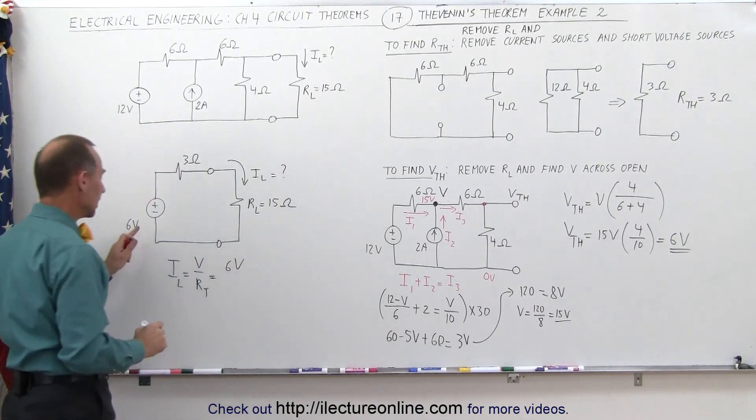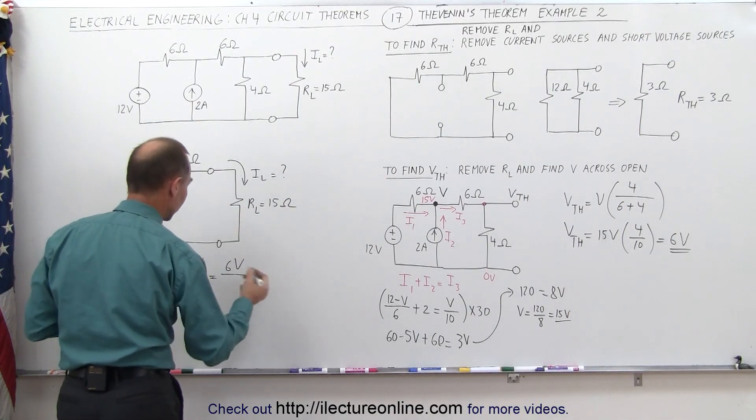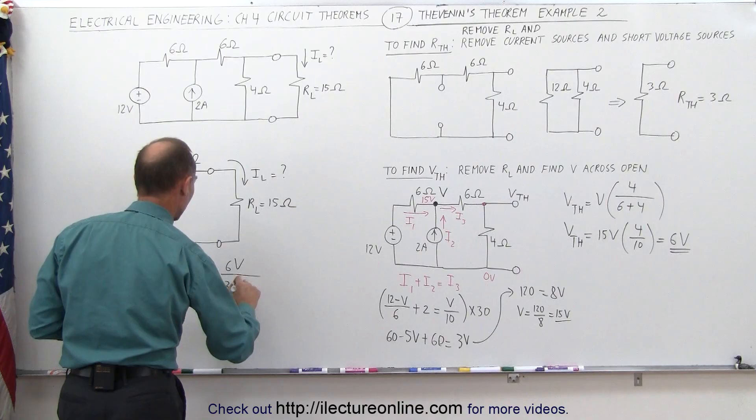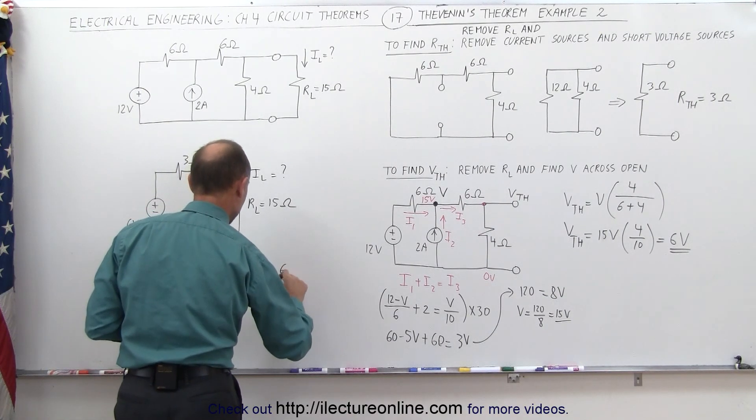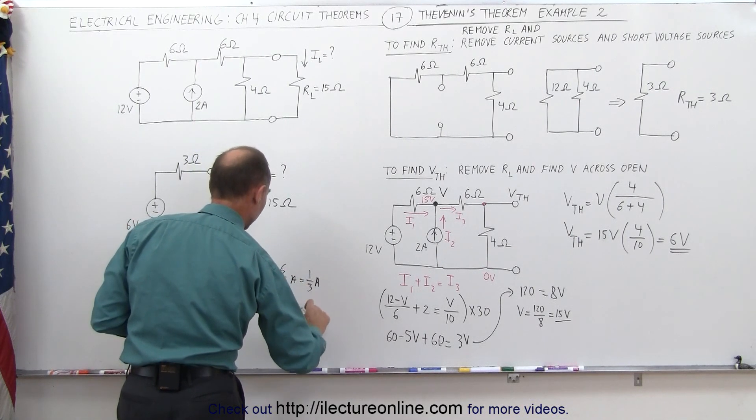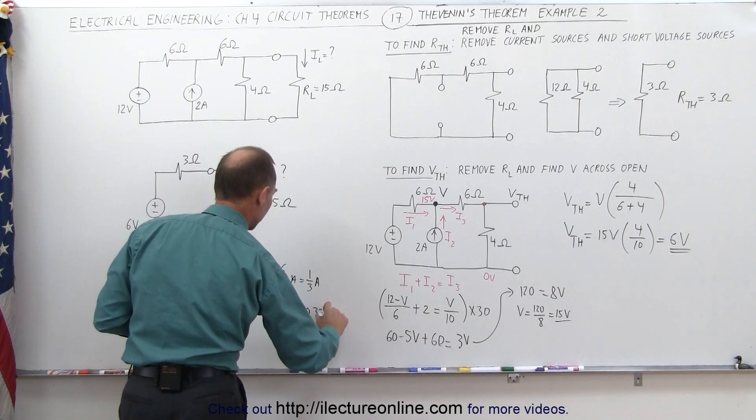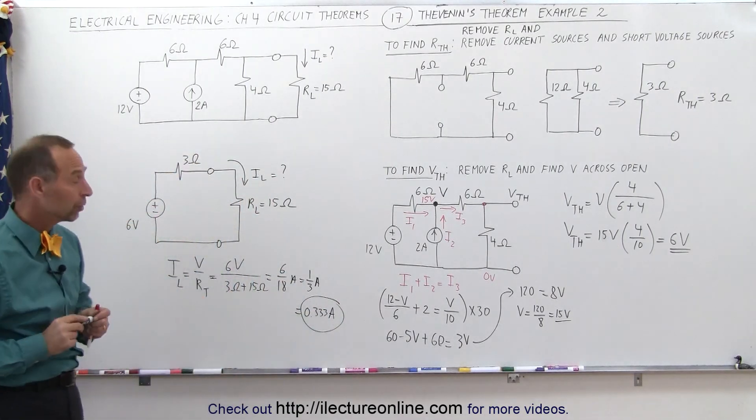that is the 6 volts from the Thevenin voltage divided by the sum of the two resistances. Since they're in series, that would be 3 ohms plus 15 ohms, which is equal to 6 divided by 18 amps, which is one-third of an amp, which is equal to 0.333 amps out to three decimal places.